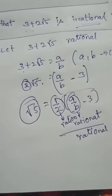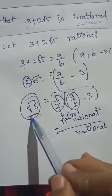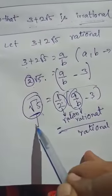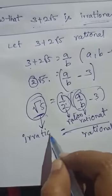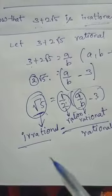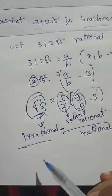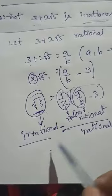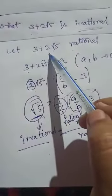But √5 is irrational. Here, LHS is not equal to RHS, so our assumption is wrong. 3 + 2√5 being rational is wrong.